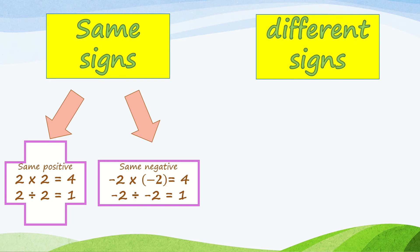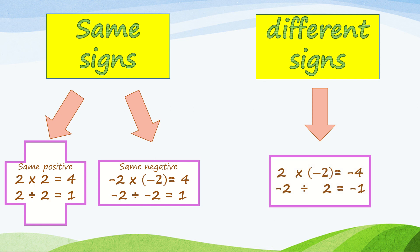How about different signs? For example, 2 times negative 2, and negative 2 divided by 2. As you can see, both problems have different signs. Negative 2 times 2 is equal to negative 4, and negative 2 divided by 2 is equal to negative 1.